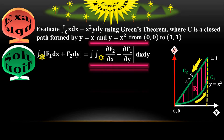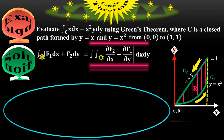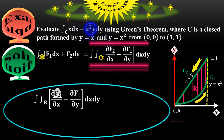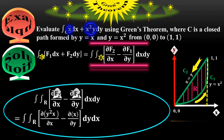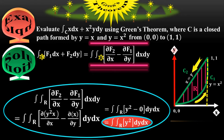According to Green's theorem, the line integral around an object equals the double integral over the region of that object, so I will only calculate the right side. Substituting f₂ equals x squared times y and f₁ equals x, and taking their partial derivatives: the partial derivative of x squared times y with respect to x is y squared, and the partial derivative of x with respect to y is 0.